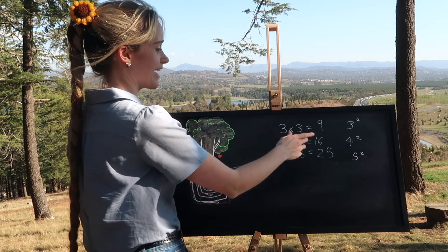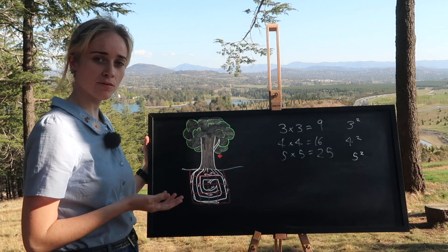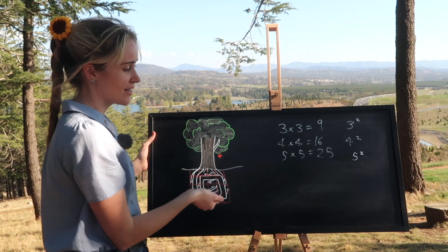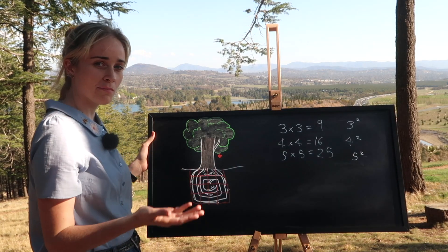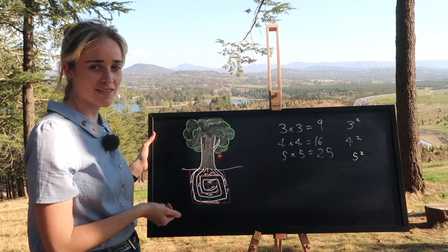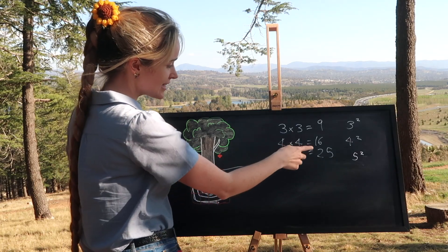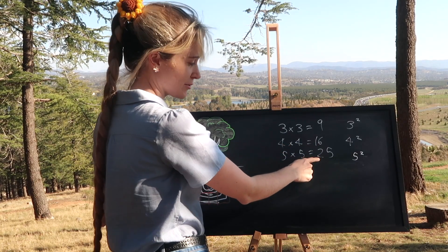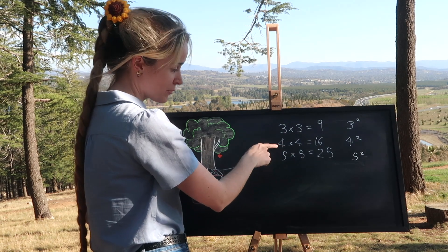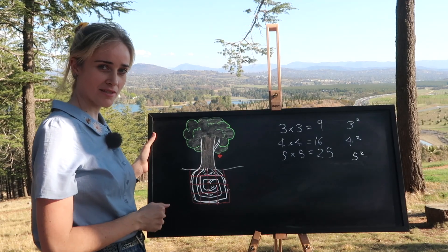All these numbers that I've mentioned — 9, 16, 25 — they're all called perfect squares because they are the squares of whole numbers. We could look at a non-perfect square, say 20, although all numbers are perfect in their own way. 20 is between 16 and 25, so the square root of 20 would be somewhere between 4 and 5, and in fact it is 4.47.